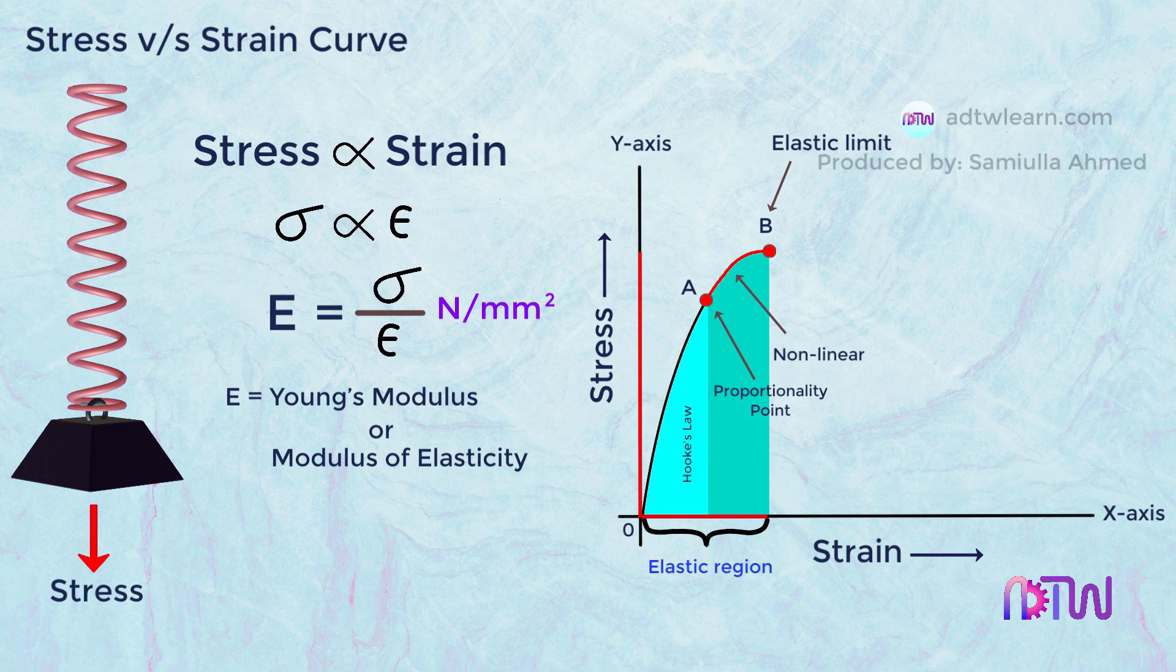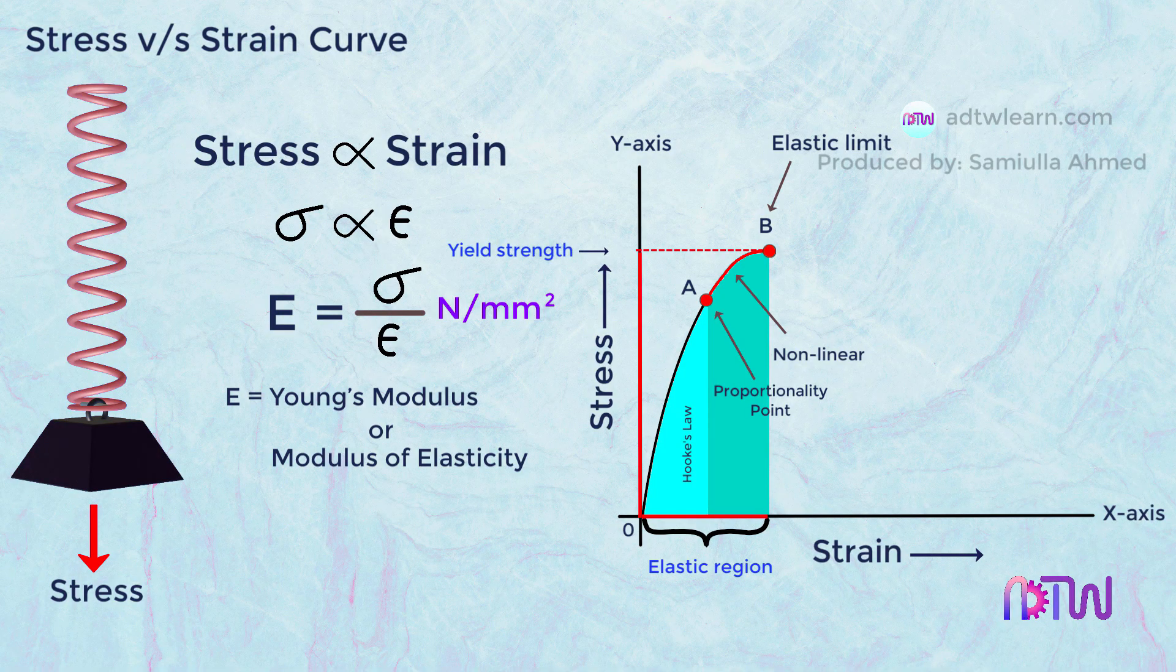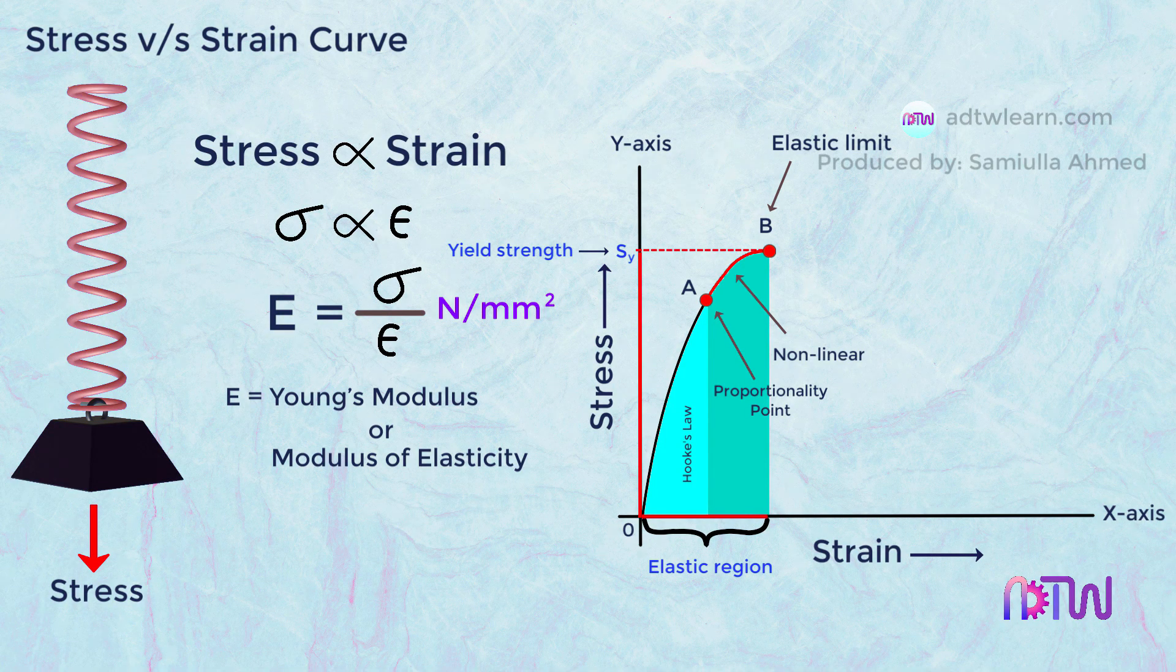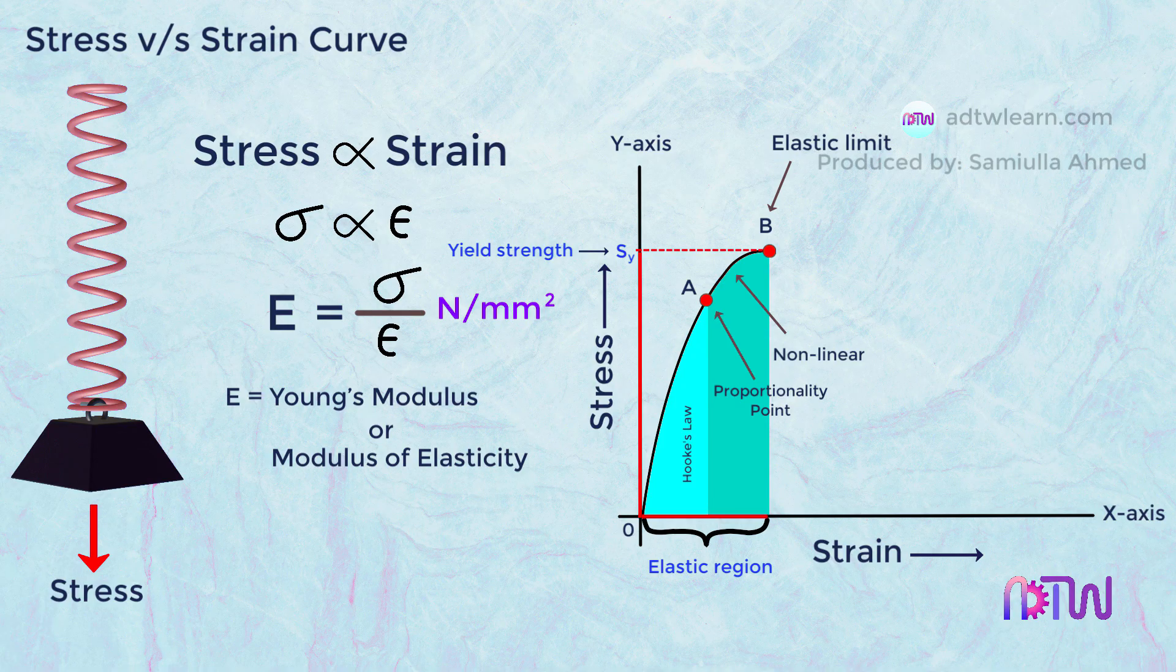This point B is called elastic limit, and the corresponding stress is called yield strength and is denoted by S-Y. If we remove the stress acting on the body at this point, the body regains its original position.